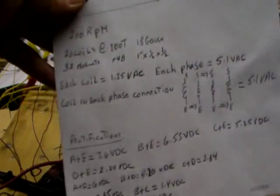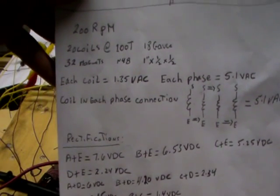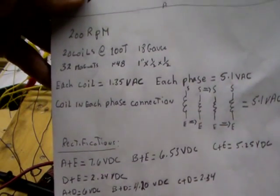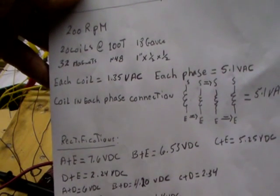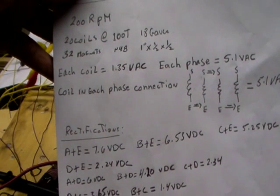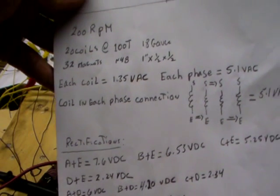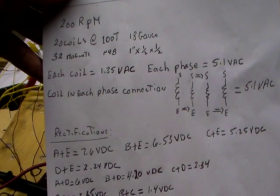So this is what we're doing. We're going around and around at 200 rpm. I have 20 coils at 100 turns using 18 gauge wire. I have one disc of 32 magnets and 48, one inch half and half.